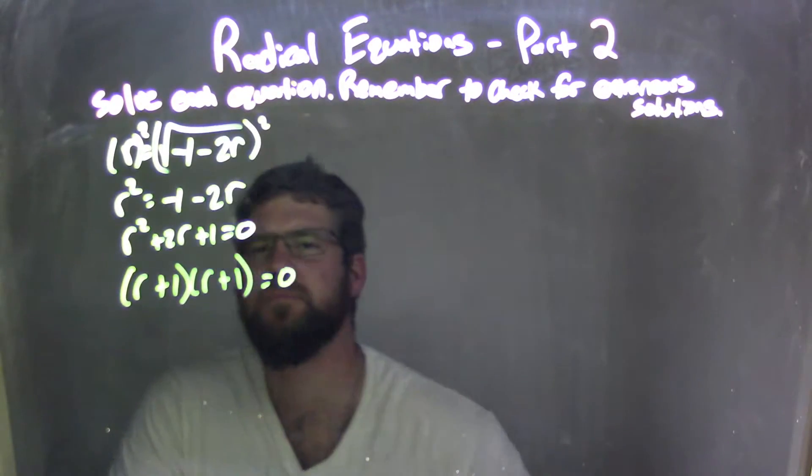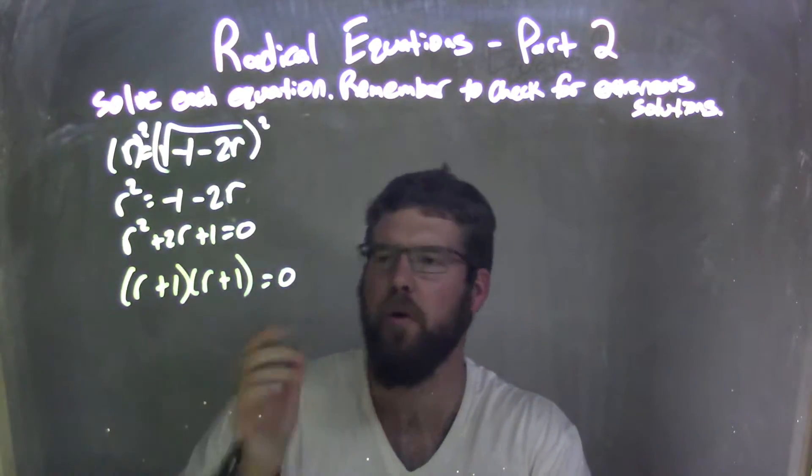What two numbers multiply to be a 1 and add to be 2? That's r plus 1 and r plus 1. 1 times 1 is 1, 1 plus 1 is 2. Fantastic.